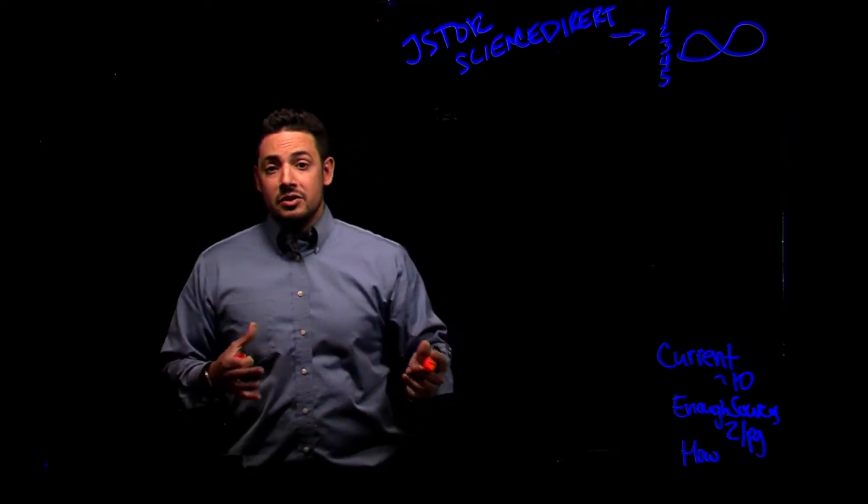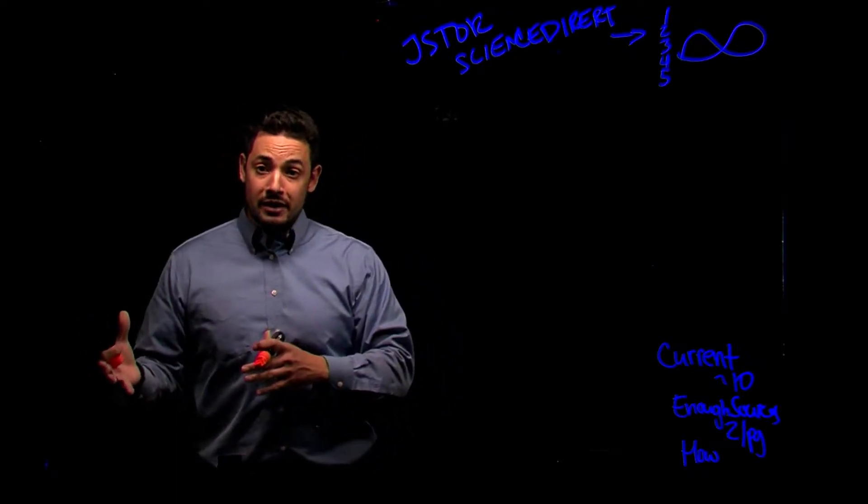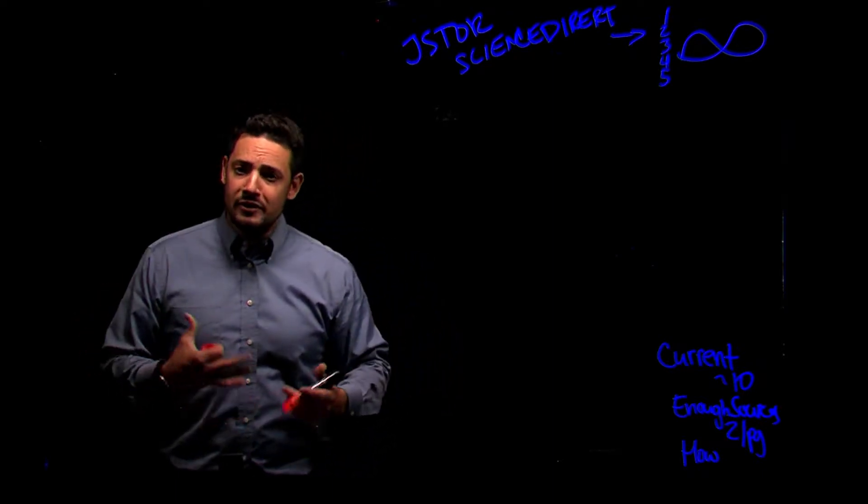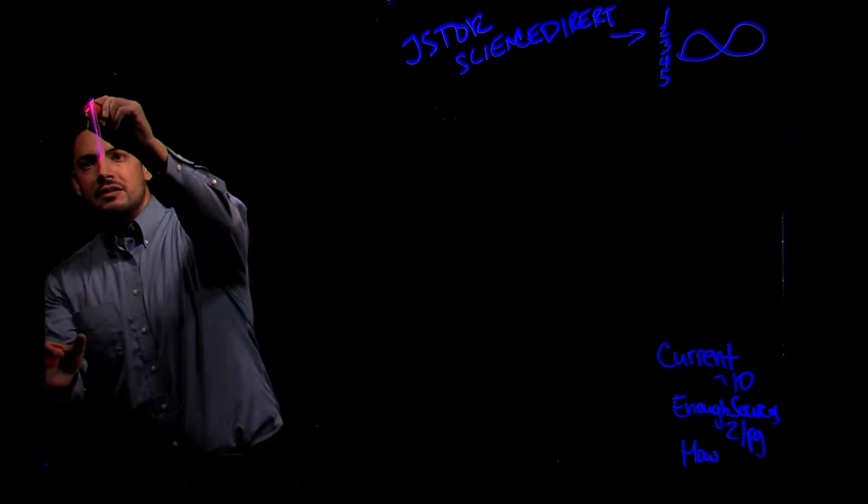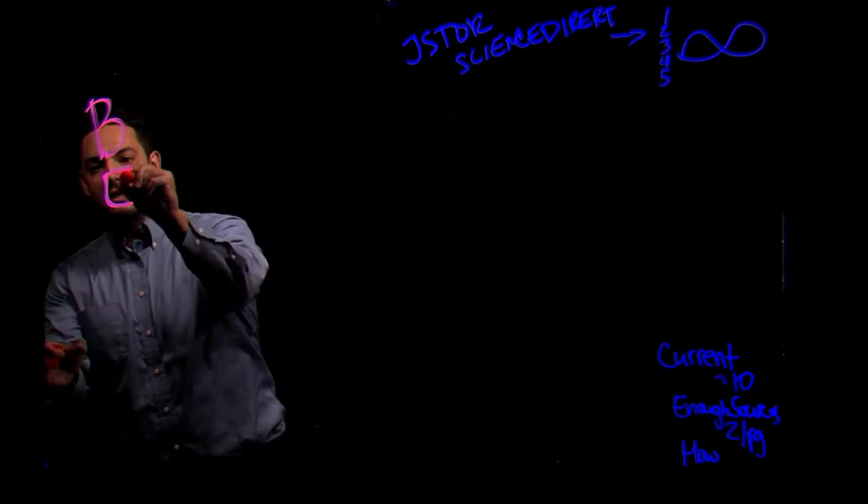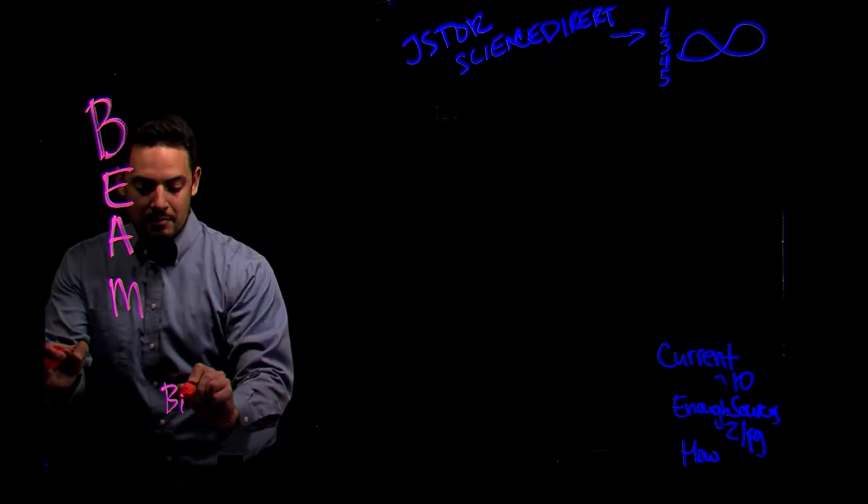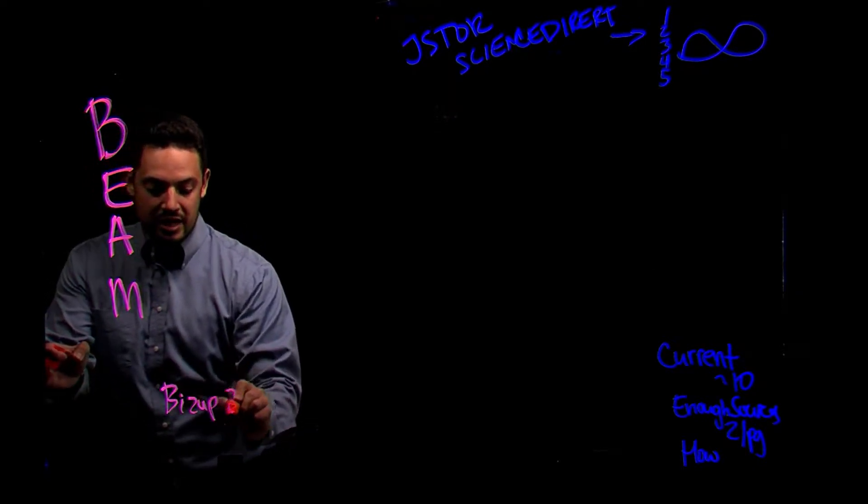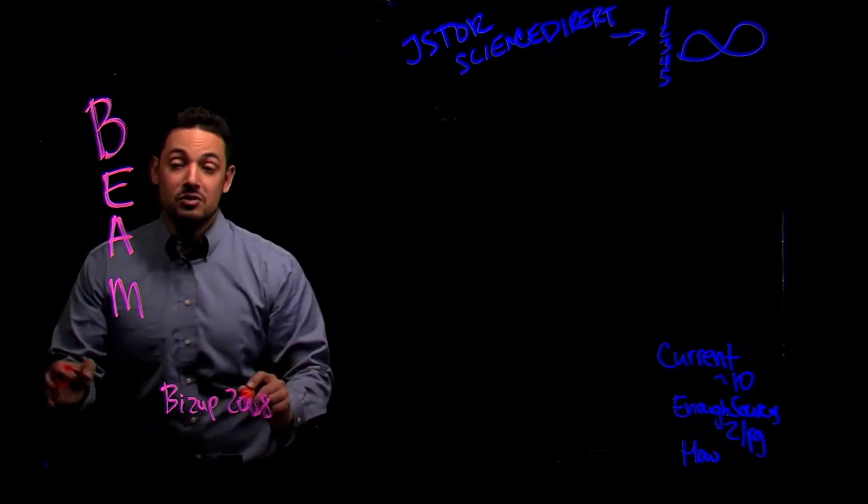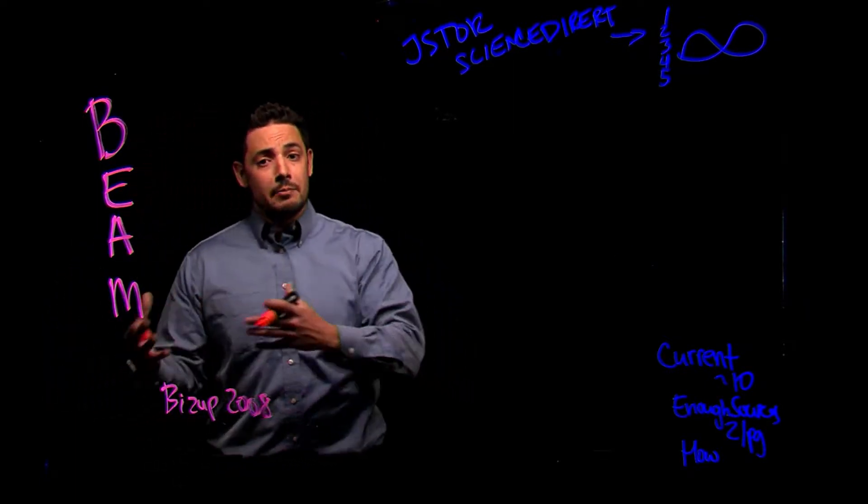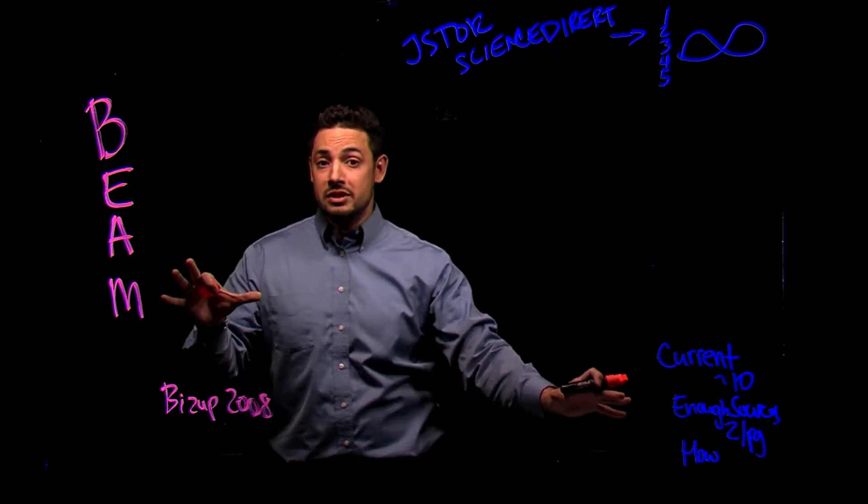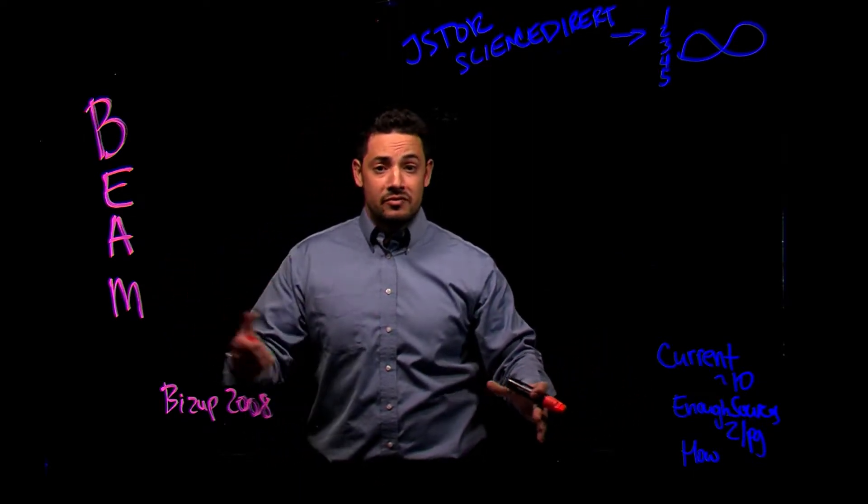Now, one of the additional things I like to include when I'm identifying information from my annotated bibliography is using these BEAM categories. BEAM is a framework put forward by Joseph Bizup back in 2008, and it's a way of being rhetorical and purposeful for how we're in fact using this information to make it most effective for us.